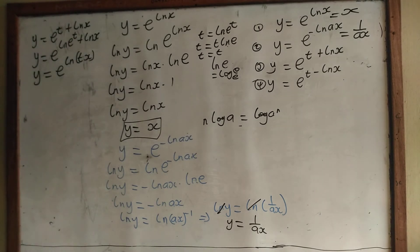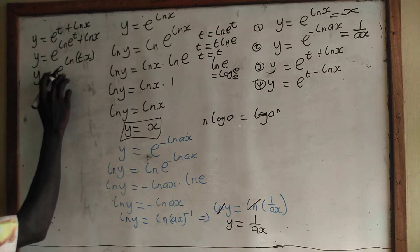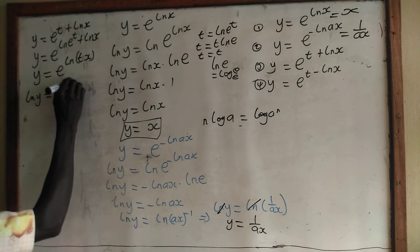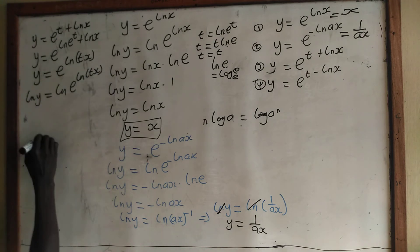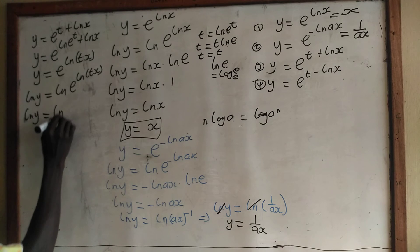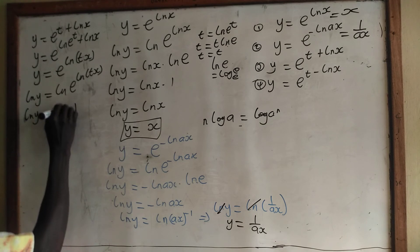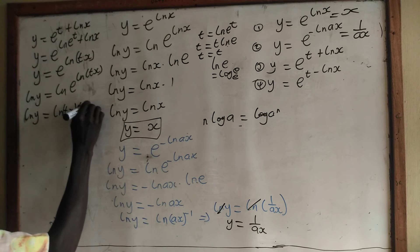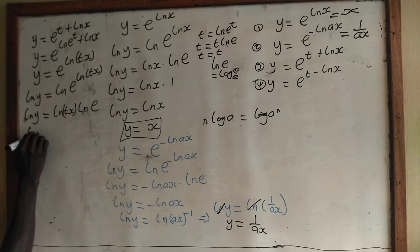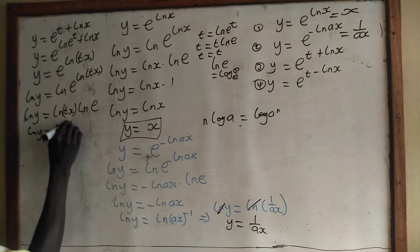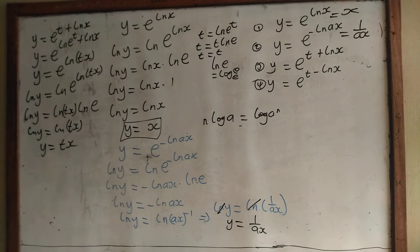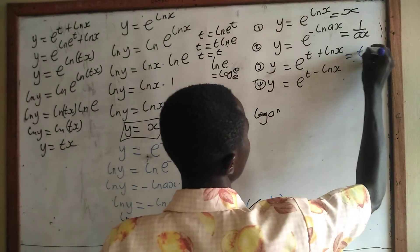So for that one, if we take ln of both sides, we have ln y equal to ln of e to the power ln of t times x. From the logarithm law, the power comes down, so we have ln y equal to ln of t times x, times ln e. And since ln e is 1, we have ln y equal to ln of tx. If we take anti-ln of both sides, we have y equal to tx. So the whole expression is equal to t times x.